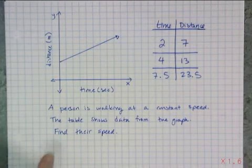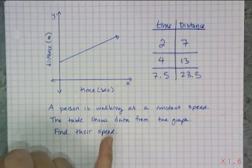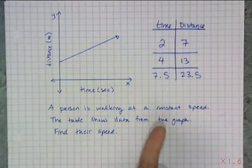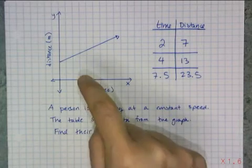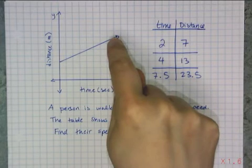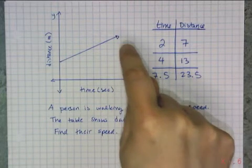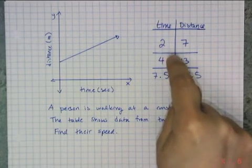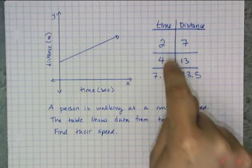So if I can find this person's speed and show that it's constant, then I know it's linear. Because I know that if I have a graph that's a distance in time and it's a straight line, that means that person was walking at a constant speed. So if I can show constant speed on this table, then I can show this table is linear.